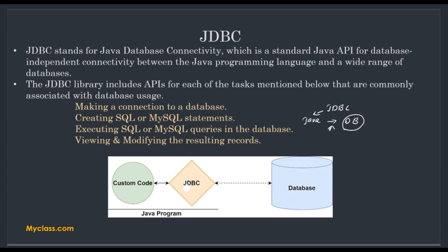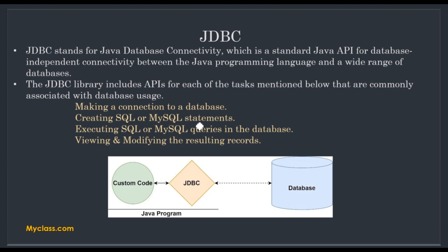The JDBC library includes APIs for each of the tasks mentioned below. These tasks are mainly what we are using JDBC libraries for. These tasks are like making a connection to a database, creating SQL or MySQL statements, executing SQL or MySQL queries in the database, then viewing and modifying the resulting records. These are the main tasks that we do with the help of JDBC libraries in our Java program to connect to our database.